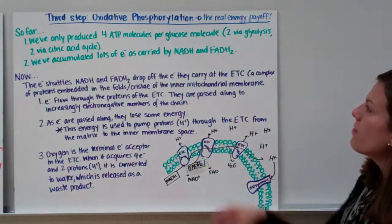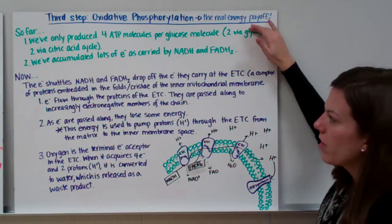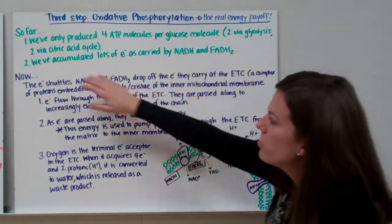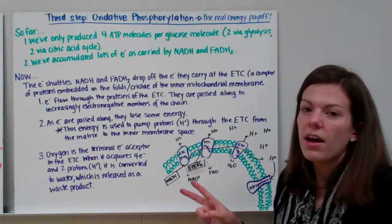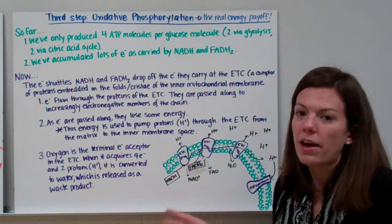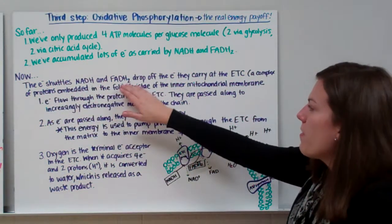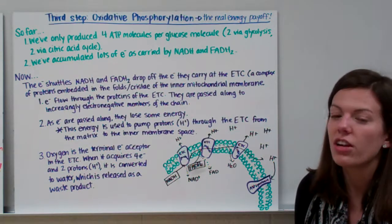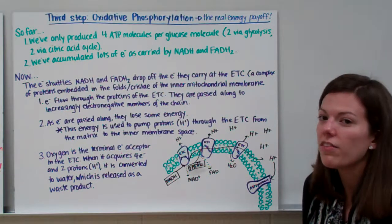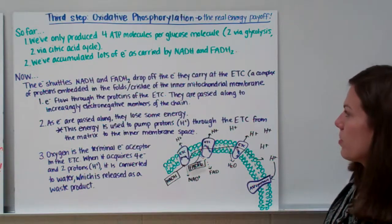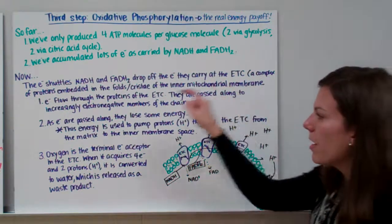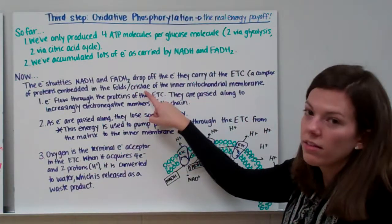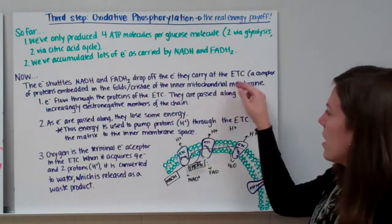Our third step is oxidative phosphorylation — the real energy payoff. So far we've only produced four ATP molecules: two via glycolysis and two via the citric acid cycle. The electron shuttles NADH and FADH2 are going to drop off the electrons they carry at the electron transport chain, which is a complex of proteins embedded in the folds of the inner mitochondrial membrane — those folds are also known as cristae.